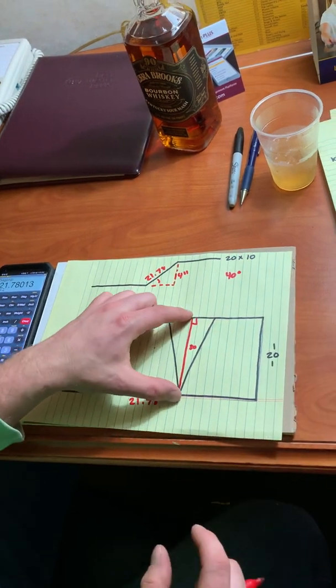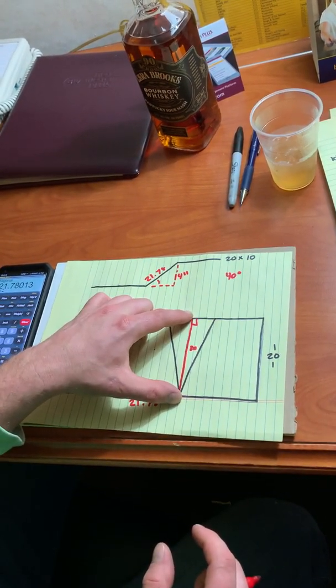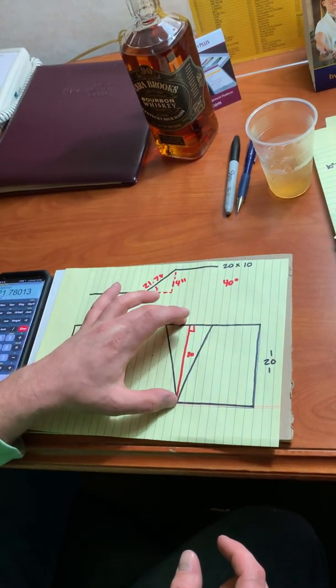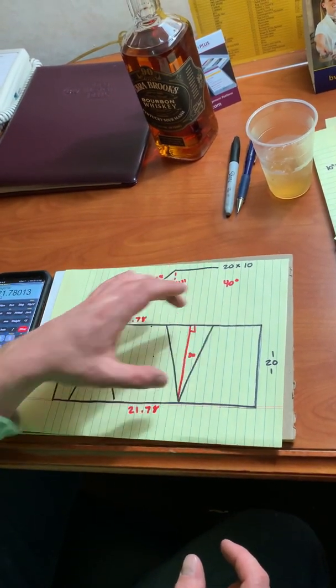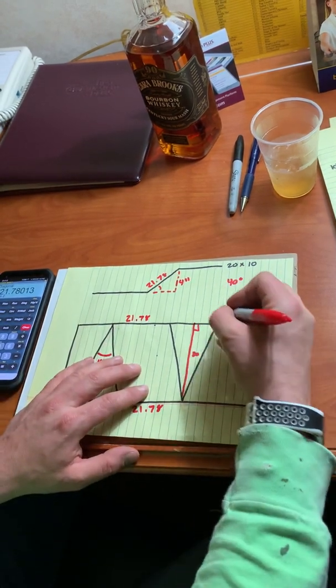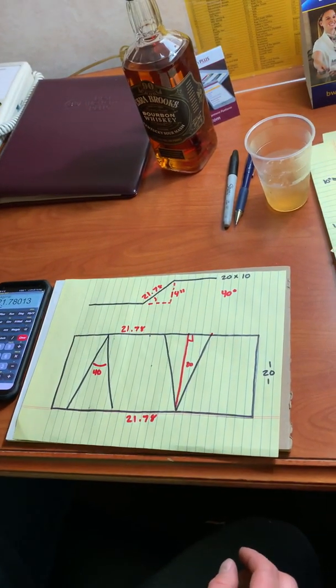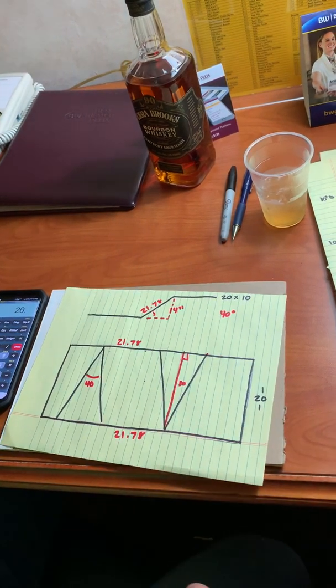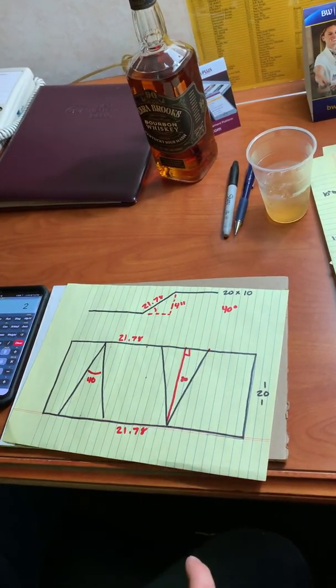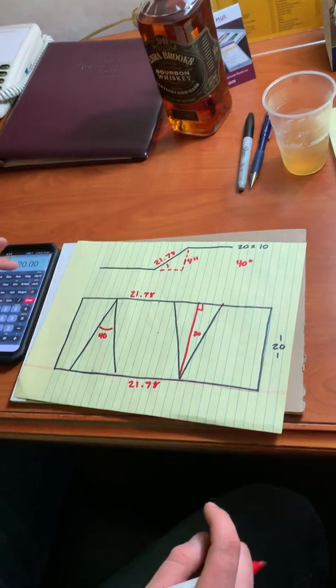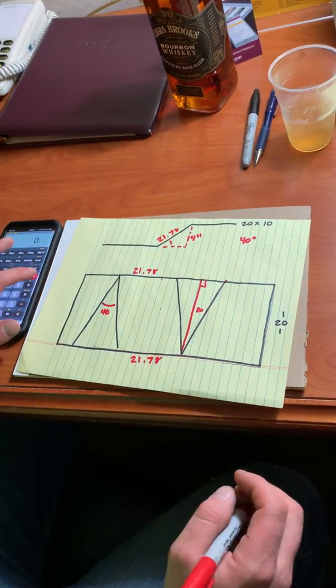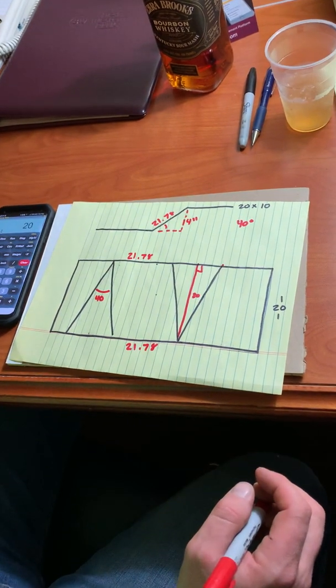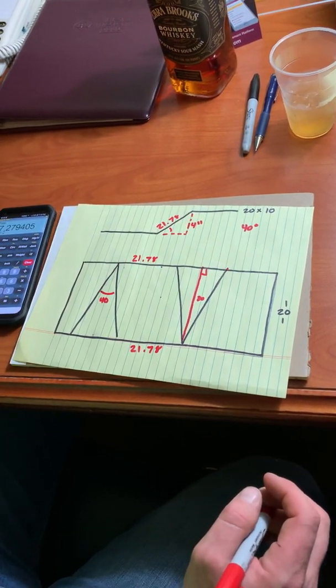20 would be my run. So this is your rise. We want to know our rise. We don't care about our run because we know it's 20. We don't care about our diagonal either because when we lay this out on the duct, we're going to put a point here and a point here. What we want to do is we want to do 20 pitch, 20 run to get a rise. Your rise would be 7.28.